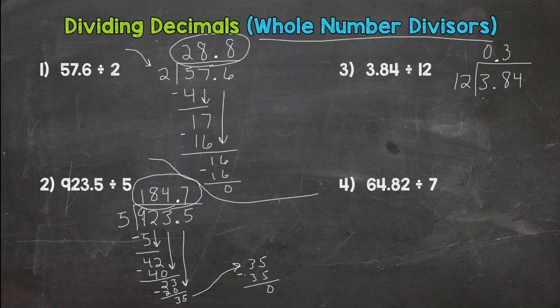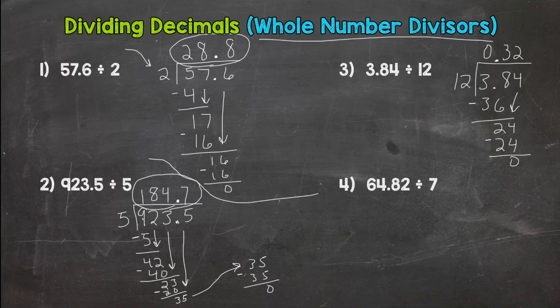Subtract, I get 2. And then bring down this 4. And I get to 24 divided by 12. Nice compatible numbers here. 2 groups of 12 out of 24. 2 times 12 is 24. You get 0. 0.32. Or, that's going back to the situation before. I'm not sure why you would split $3.84 between 12 people. But if you do, everybody's getting 32 cents.